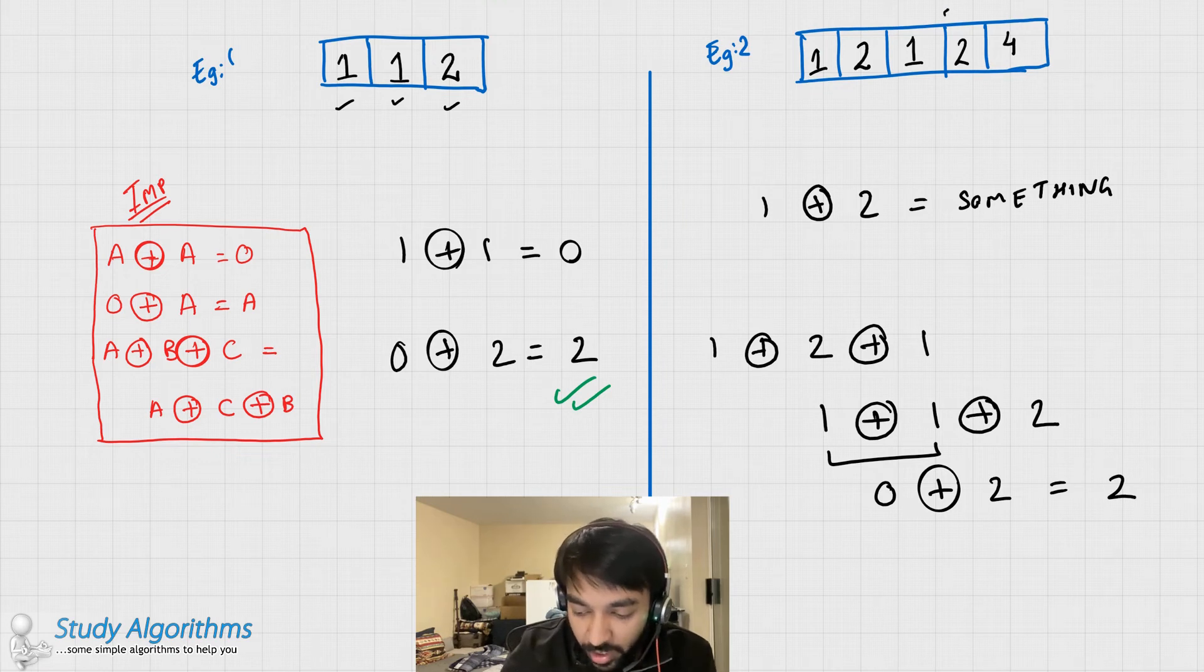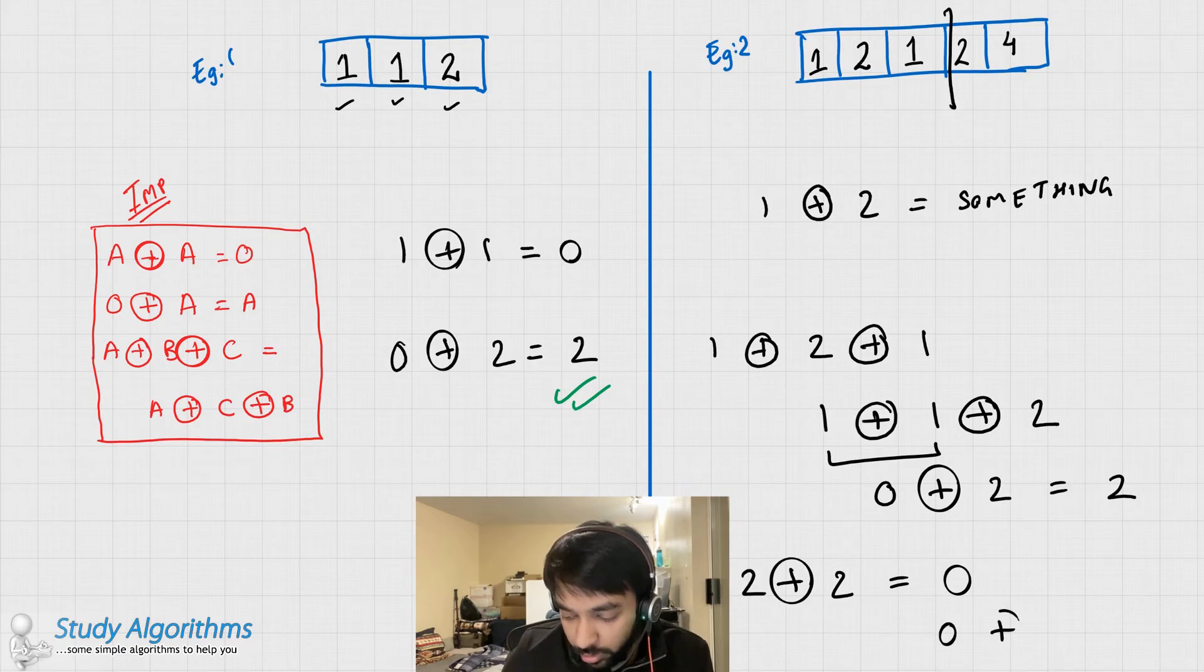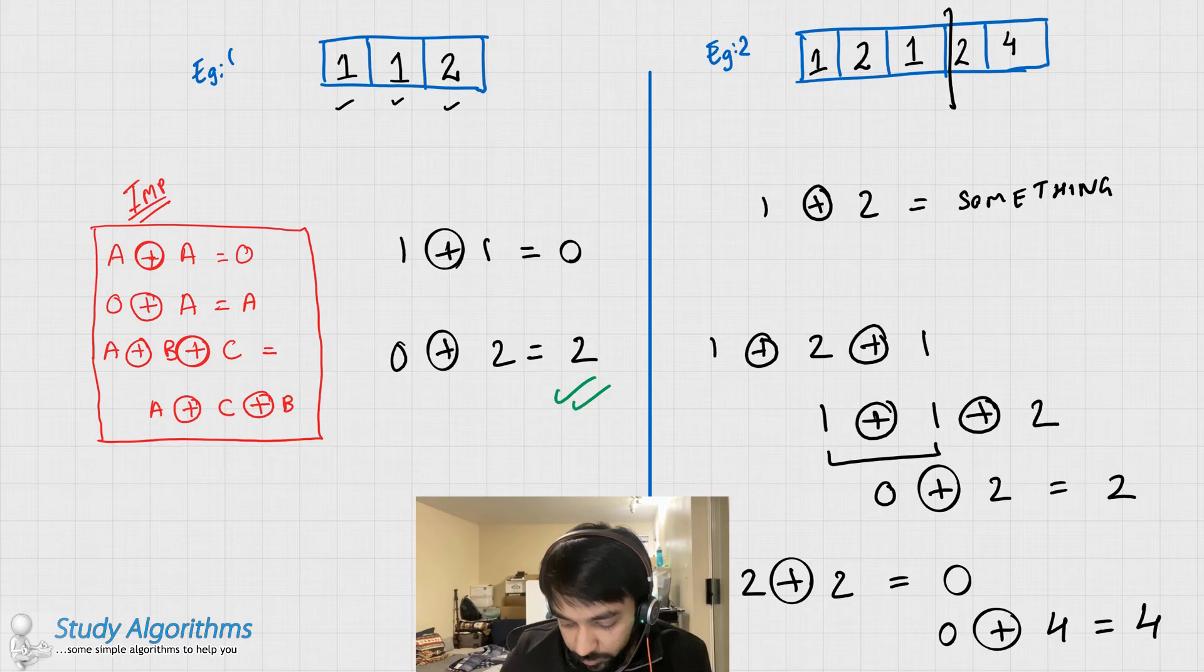And hence, till here we are at 2. You go ahead 2 XOR 2 would be again 0. And then going forward 0 XOR 4 equals to 4. And again you can see 4 is our answer.